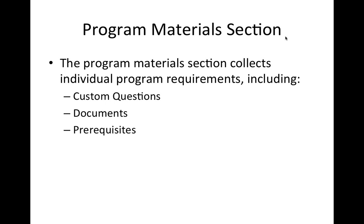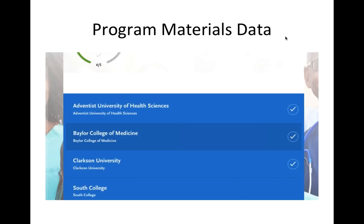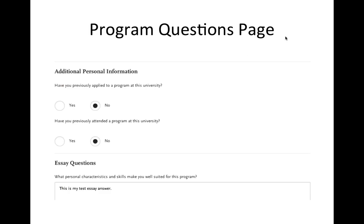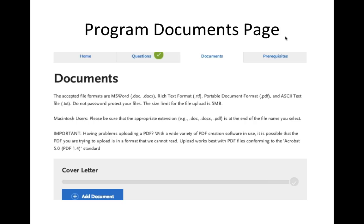The program materials section will collect any custom options that an individual program may choose to request from applicants. This may include custom questions, documents, and prerequisites. On this slide is a snapshot of the program materials section home page. A list of all your selected programs will appear here. To complete the program specific requirements, you will click on each program and their custom options will appear on their branding page. Here is a snapshot of the custom questions a program may request or require. Please note this is for sample only. If any question in this section is required, it must be completed before you can submit your application to that specific program.